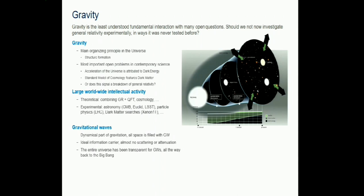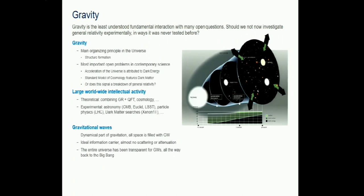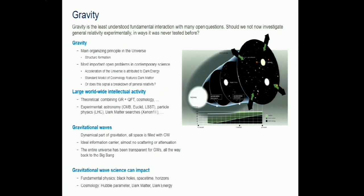Gravitational waves are essentially the dynamical part of gravity interaction and are difficult to detect - but you can put this positively: they are a very clean probe because they almost don't scatter and almost don't get attenuated. With gravitational waves you could look back to about 10⁻³⁴ seconds after the Big Bang, only then does curvature change so rapidly that they would scatter. The impact highlighted here relates more to fundamental physics and cosmology; astrophysics and astronomy aspects are not touched upon due to personal interest.